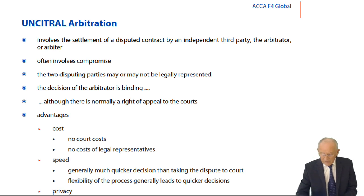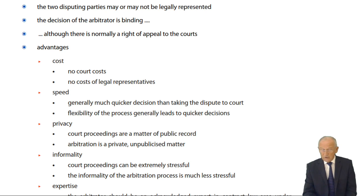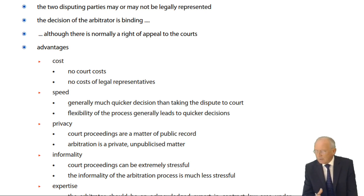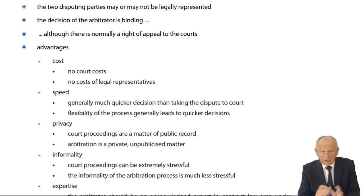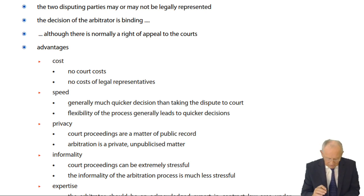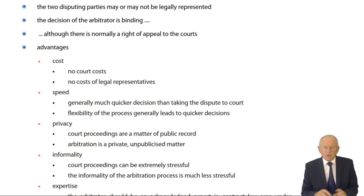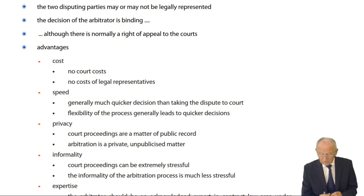It often involves compromise. Two parties may or may not be legally represented — though legal representation doesn't come cheap. The decision of the arbitrator is binding, although there is normally a right of appeal to the courts. If you don't like the decision, you can accept it reluctantly, challenge the arbitrator's identity, or challenge the decision on the basis that it is against the law of the contracting state of one of the disputing parties.